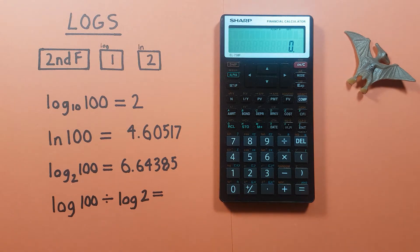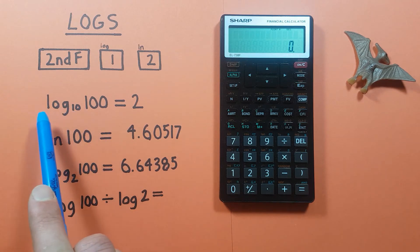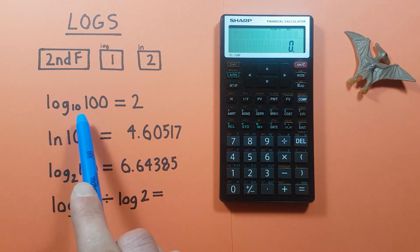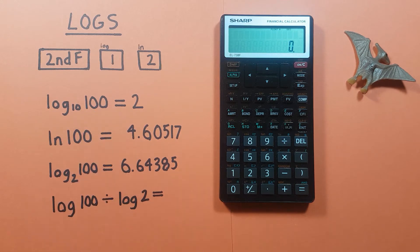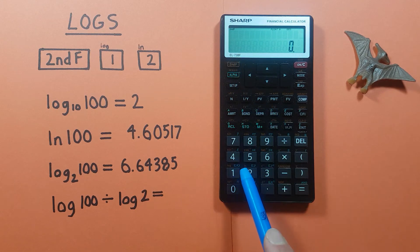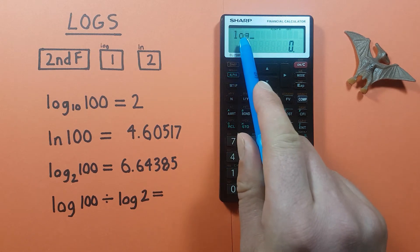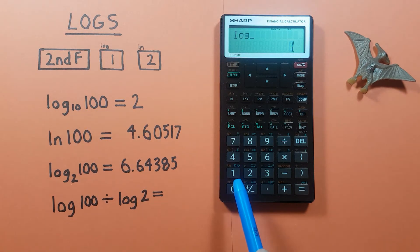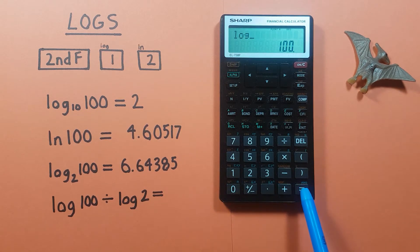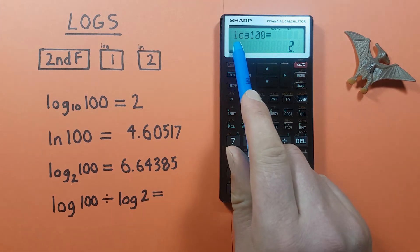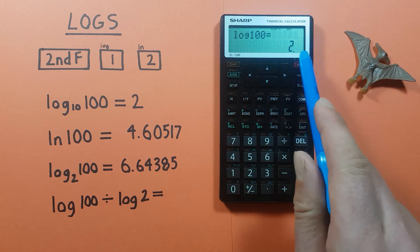The default log base on this calculator is log base 10, so if we want to find a log base 10 number, like log base 10 of 100, all we have to do is press 2nd log, enter the number 100, and press equals. We get the result: log base 10 of 100 is equal to 2.